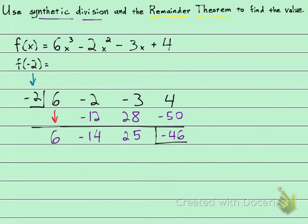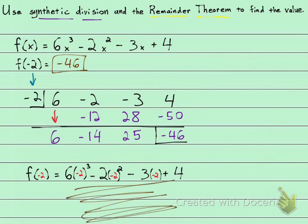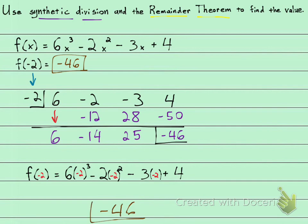This function, at negative 2, gives me negative 46. If you want to, you can try it. Go ahead and try that. And after you do all your calculations, you should get negative 46.